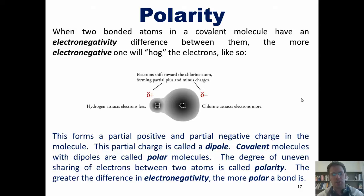Now, this partial charge difference is called a dipole. Covalent molecules with dipoles are called polar molecules. The degree of uneven sharing of electrons between two atoms is called polarity. The greater the difference in electronegativity, the more polar a bond is.